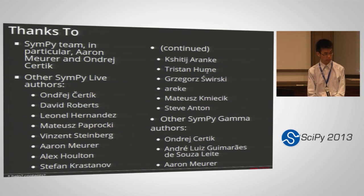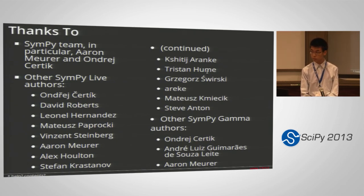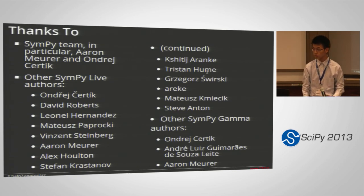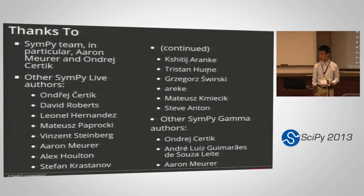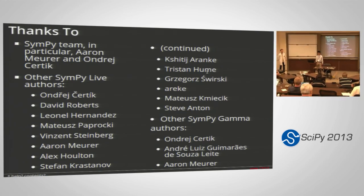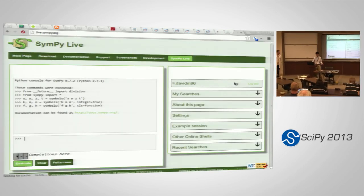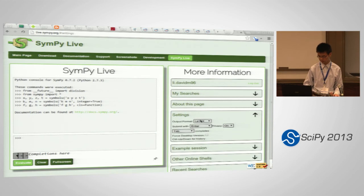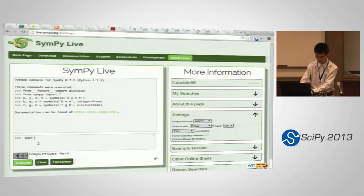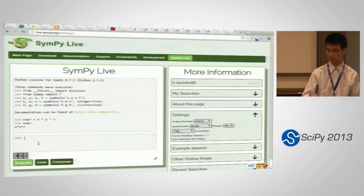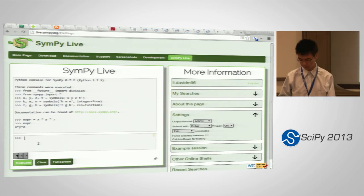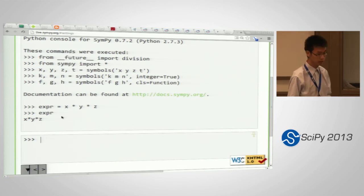Audience comment about teaching use case: If everything is embedded in the web page you can just click on it and teach from it without the extra LaTeX rendering being confusing. You can actually change the output from LaTeX to text. SymPy Live has a variety of output renderers — you don't have to use LaTeX. You can also use the plain ASCII renderer, which just prints it using normal console output.